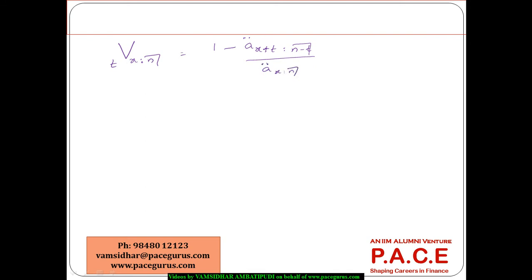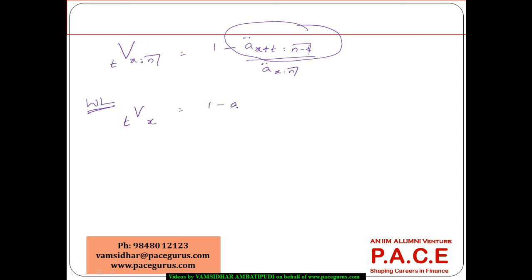This result means the reserve is 1 minus the present value of annuities from time T to N divided by the present value of annuities at the time of taking the policy. It's a clear measure of the prospective result. The same logic extends to a whole life policy: T_V_X = 1 − A(X+T) / A_X.